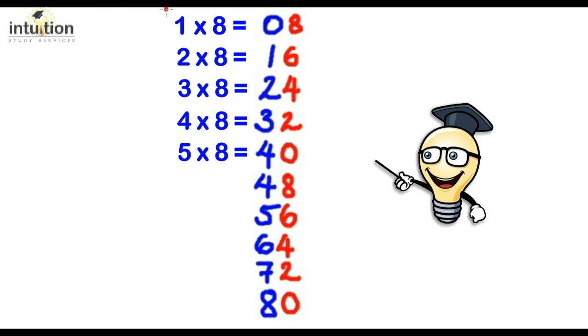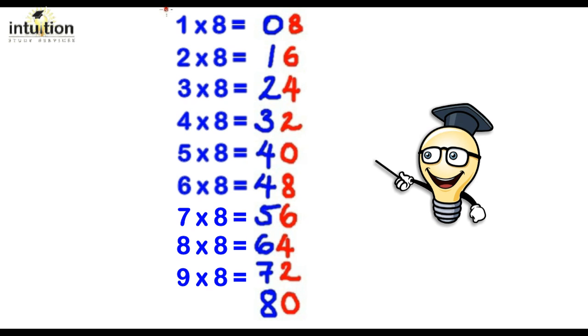5 times 8 equals 40, 6 times 8 equals 48, 7 times 8 equals 56, 8 times 8 equals 64, 9 times 8 equals 72, and 10 times 8 equals 80.